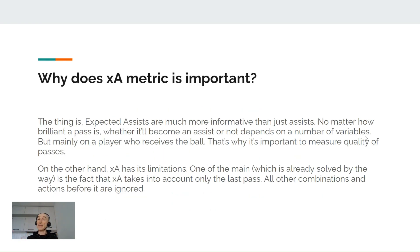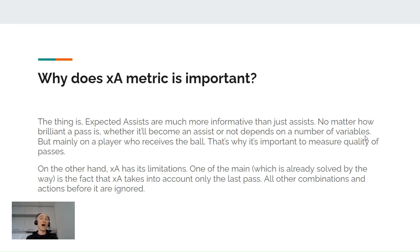Why is the expected assists metric important? Expected assists are much more informative than just assists by themselves. No matter how brilliant a pass is, whether it will become an assist or not depends on a number of variables, but mainly on the player who receives the ball. That's why it's important to measure the quality of passes. On the other hand, expected assists has its own limitations. One of the main ones — which is already solved, by the way — is the fact that the metric only takes into account the last pass, and all other combinations and actions before that last pass are ignored.